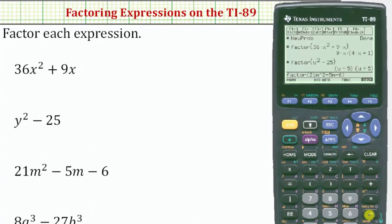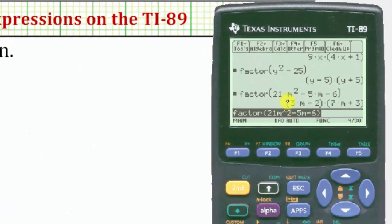Close parenthesis and enter. The factored form of 21m squared minus 5m minus 6 is the quantity 3m minus 2 times the quantity 7m plus 3.